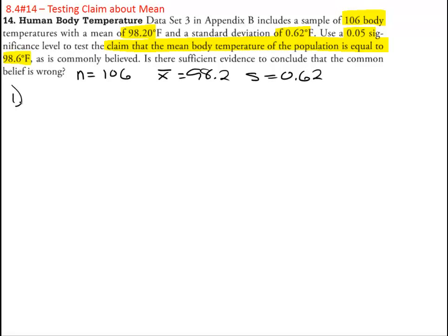Step one is identify the claim and write our hypotheses in symbols. The null hypothesis is that the average of the population is equal to 98.6 degrees Fahrenheit. So the alternative is that it is not equal to 98.6 degrees Fahrenheit.